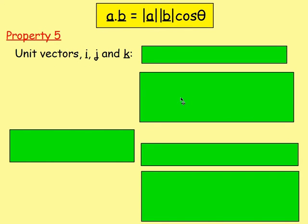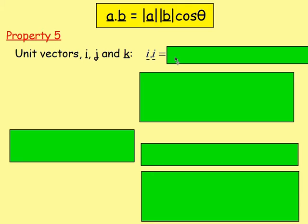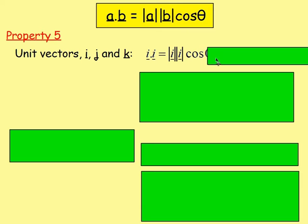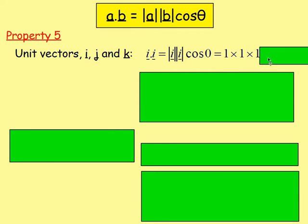Property 5: thinking of the unit vectors i, j and k. i is the unit vector in the x direction, j is in the y direction, and k is the unit vector in the z direction, each with a length of 1. If you multiply them by themselves: i dot i equals magnitude of i times magnitude of i times cos 0. They're the same vector lying on top of one another — 0 degrees between them — so it's 1 times 1 times 1, which equals 1. J dot j and k dot k are exactly the same, each giving 1.